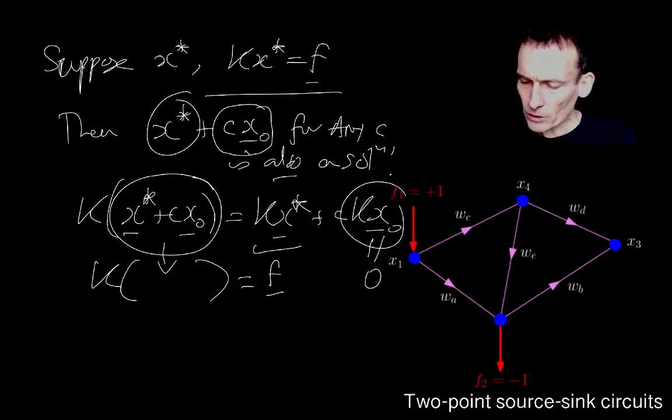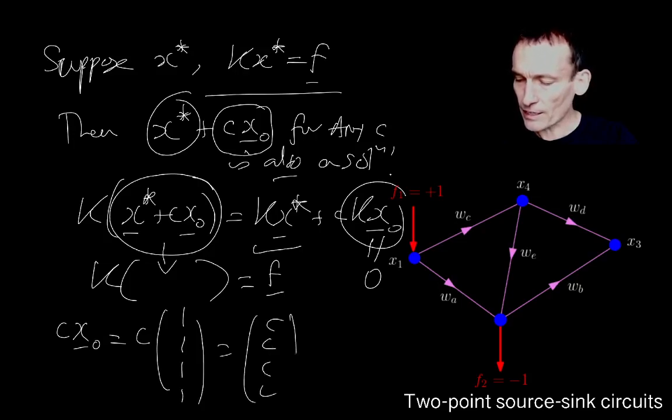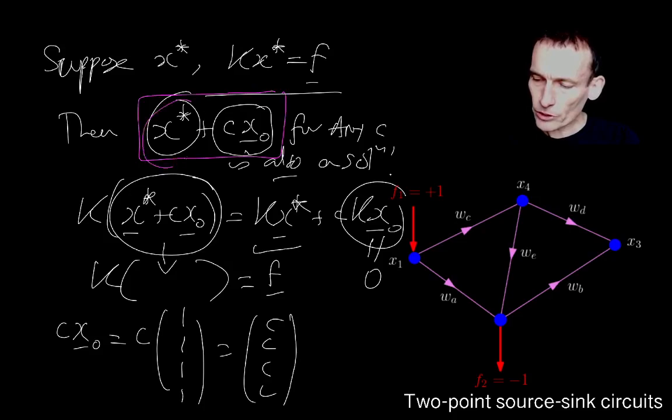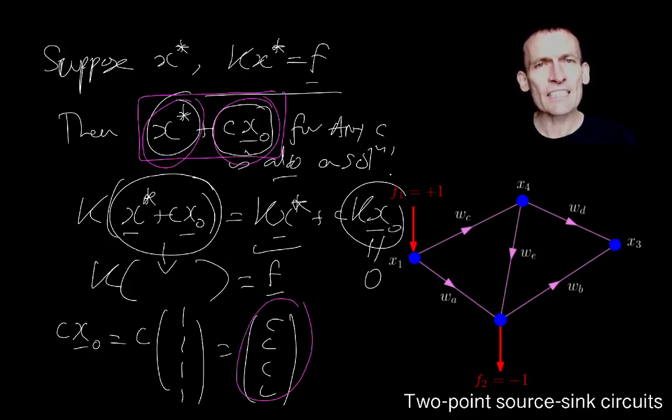You know, look, CX0 is, of course, C times 1, 1, 1, 1, which is C, C, C, C. So what it corresponds to, this thing here, taking a solution and then adding this vector here, which is this vector here, means adding the same voltage to every node. And you can see that if you add the same voltage to every node, it doesn't change the potential drops because everyone's gone up or down by the same amount. So it doesn't change the potential drops.